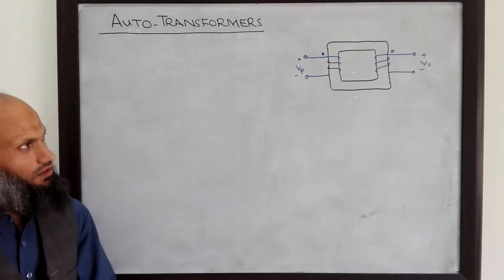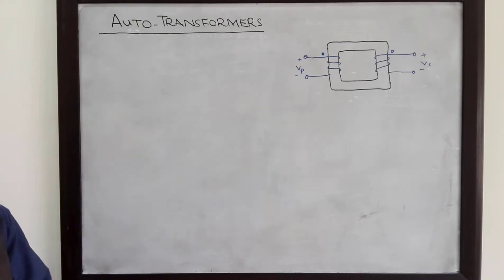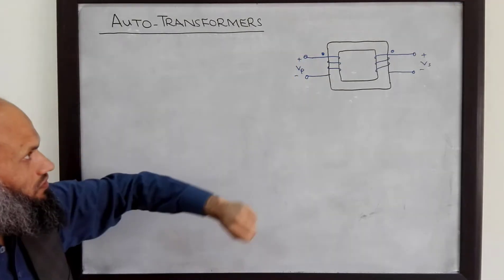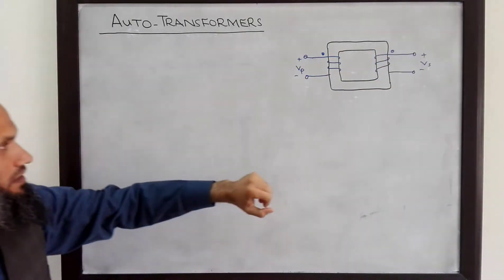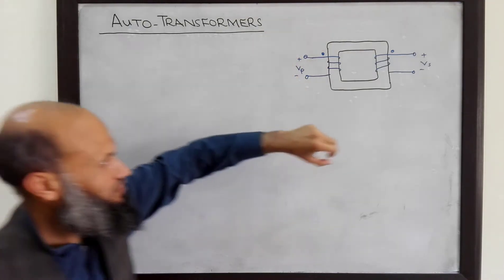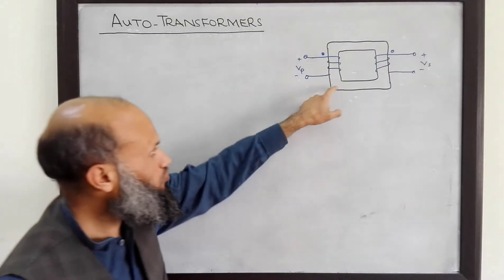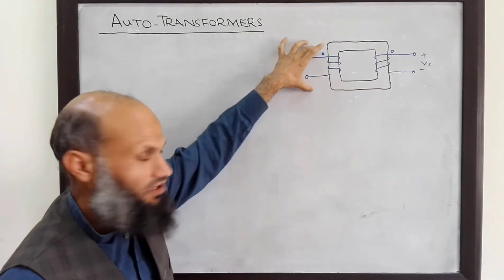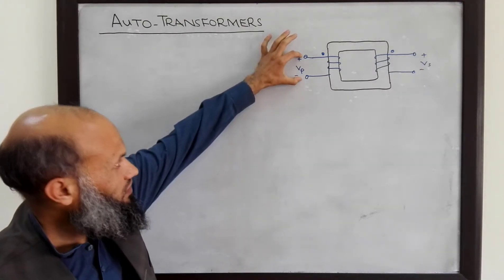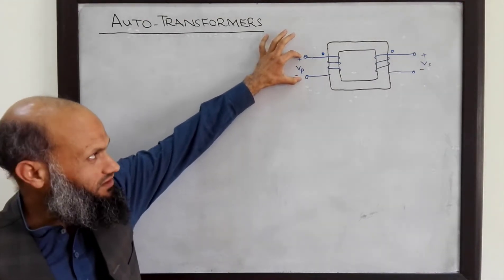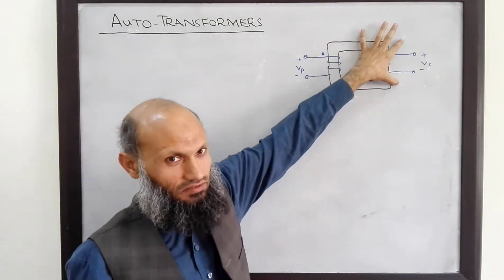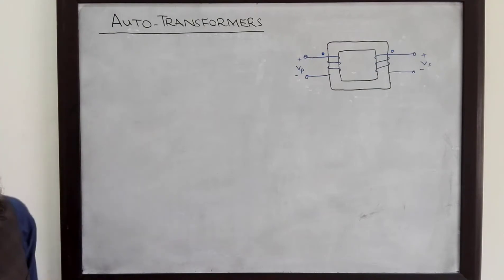Here is a schematic diagram of a conventional transformer. There is no electrical connection between the primary windings and the secondary windings. The power flows from the source connected to the primary winding to the load connected to the secondary winding through a magnetic field. There is no electrical connection — power flows through the magnetic field.